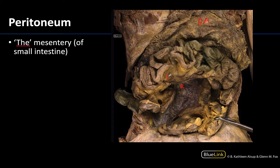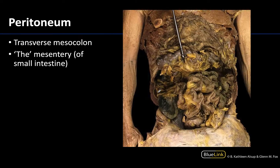All of this right here is considered part of the mesentery of the small intestine. It's actually pretty robust — something that I think you'll be able to easily observe. On this next image as well, any of this yellow portion is going to be considered part of the mesentery. Note that it has to be attached to the small intestine to be considered the mesentery of the small intestine.